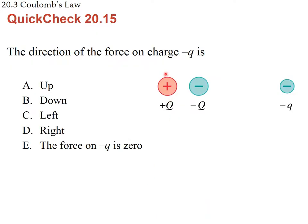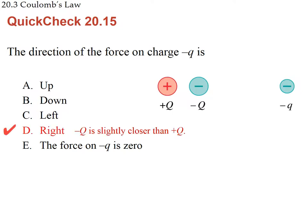Another question: what is the direction of the force on the negative charge? The repulsive force from the nearby like-sign charge pushes it to the right. The attractive force from the farther opposite charge pulls it to the right as well, but that force is smaller. The sum of the two gives a small net force to the right.